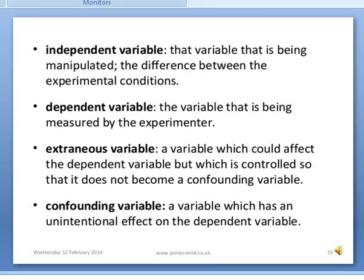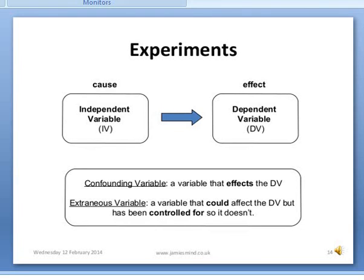These are variables we have already discussed in a previous video in detail. Here you can see one figure: cause — independent variable (IV stands for independent variable); effect — dependent variable (DV stands for dependent variable). Confounding variable is a variable that affects the dependent variable and is not controlled. Extraneous variable is a variable that could affect the dependent variable but has been controlled for.